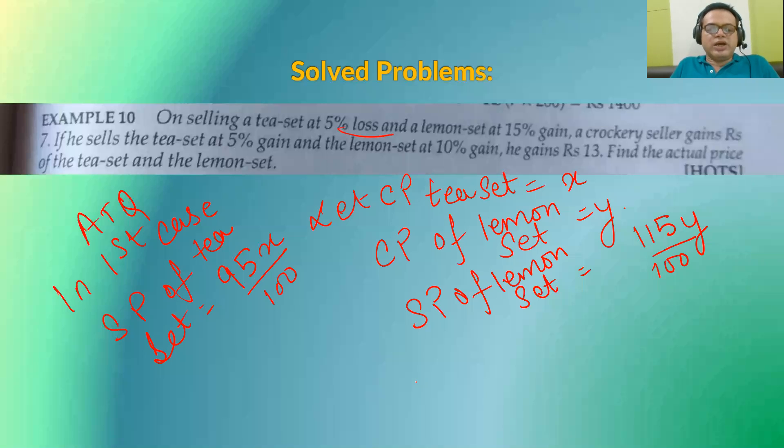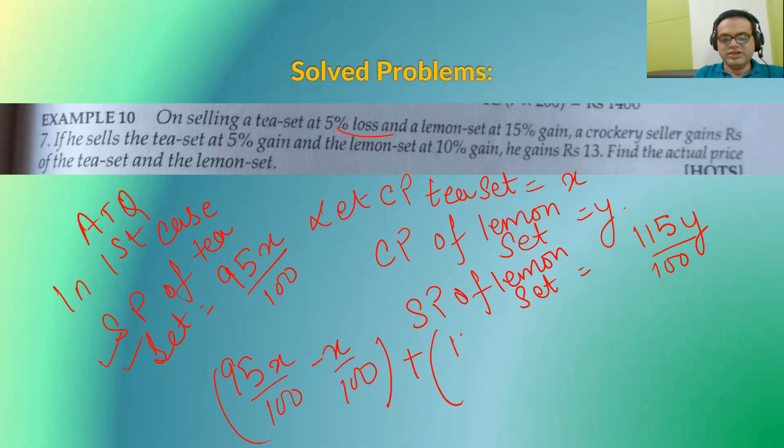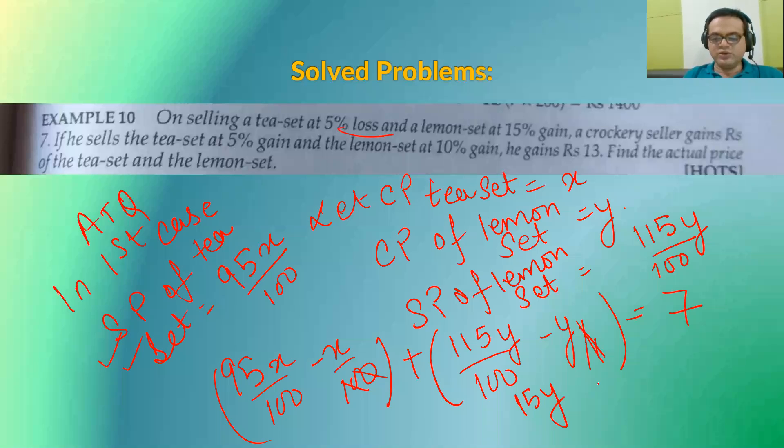When I was talking about T set, I had a loss. So this loss will be equal to 95X by 100 minus X upon 100 plus here he's having profit that is 115Y upon 100 minus Y upon 100. This is equal to Rs. 7. So finally, I can say that the equation will be equal to 15Y minus 5X will be equal to 700.